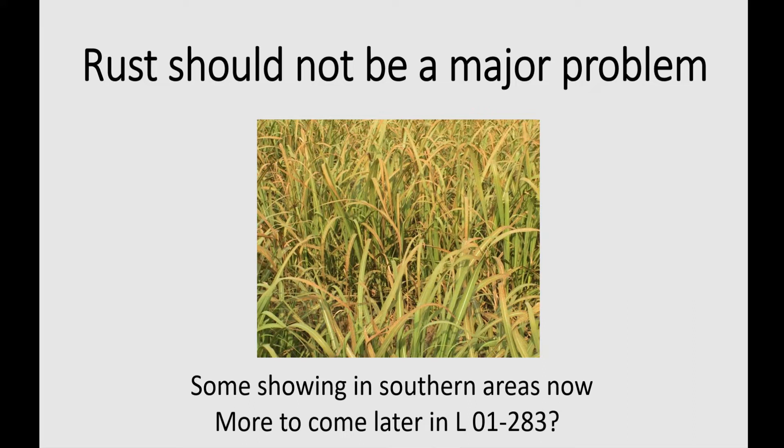It's an obligate parasite, meaning that it has to live in green leaf tissue. It can't survive in debris or in the soil. So when we have a big freeze like this, it kills the plants down to the ground — it's going to take out the rust in local areas. So there's no local inoculum to get it going in these fields in the spring following, so it has to come in from farther south.